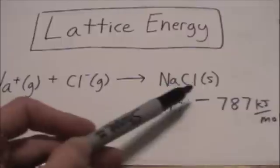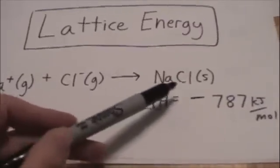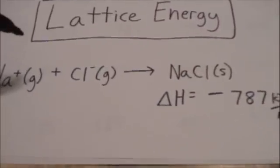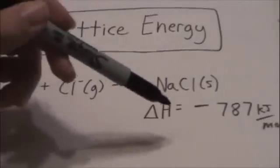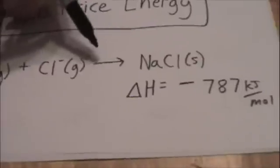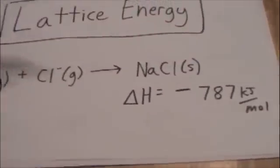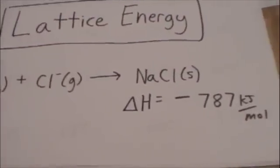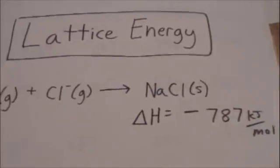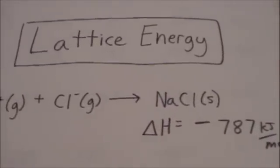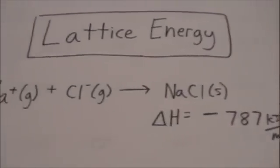If we want to break apart this ionic compound, then we're going to have to give it a lot of energy, then the delta H would be positive. So the opposite reaction would just be a positive 787, and that works for all of the delta H. Delta H is just the change in enthalpy, which is the change in thermal energy associated with the reaction.